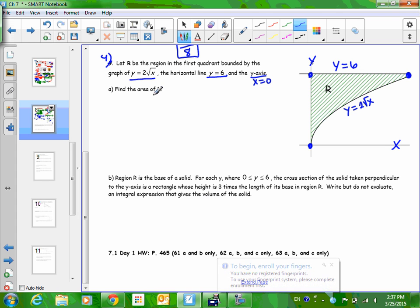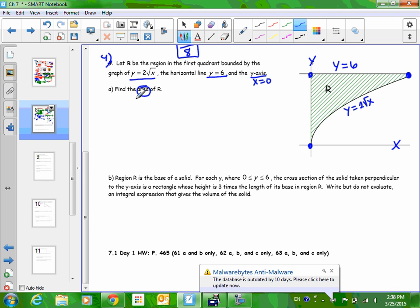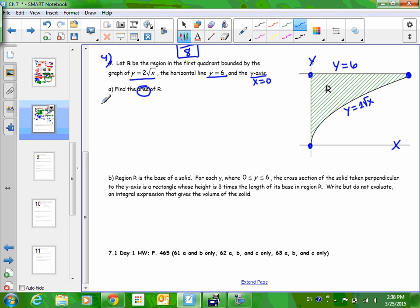Alright, so this says find the area of r. Alright, let's think about this. When we do area, we get to pick. Do we want to do this with respect to x, or do we want to do it with respect to y? You choose. Some problems, it's obviously one or the other. And some problems, you could actually do it either way. And this is one of those problems. But which one do you think would be easier? Given that this equation is y equals 2 square root of x. With respect to x. With respect to x, I think would be a little bit easier. Or more obvious.